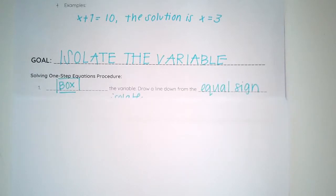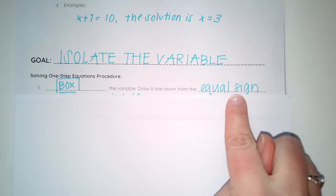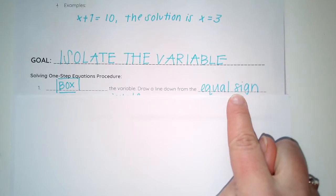We do that by starting off with a box. We box our variable and draw a line down from the equal sign. That line from the equal sign is there to show balance. Think of it like a balance beam. That line shows that whatever we do to one side, we have to do to the other side.